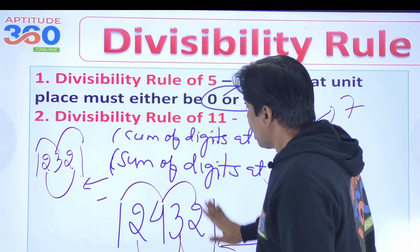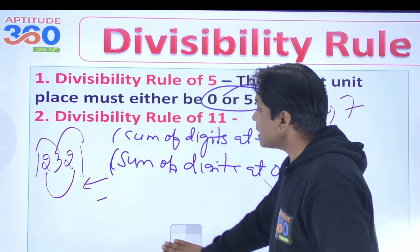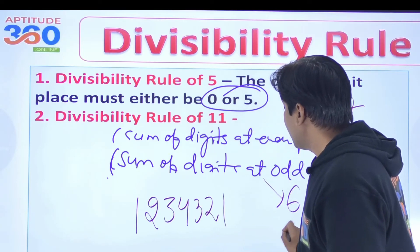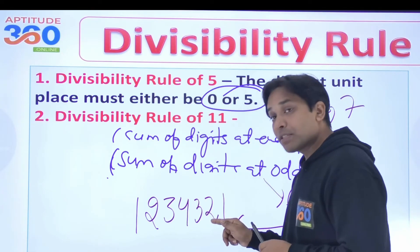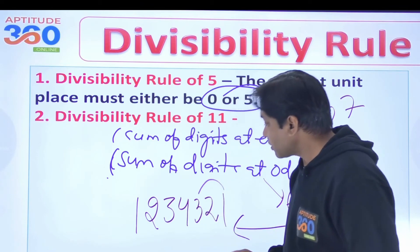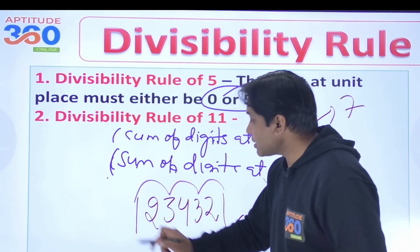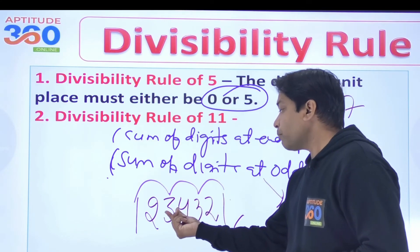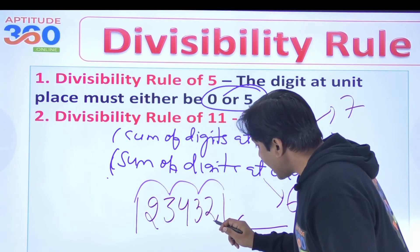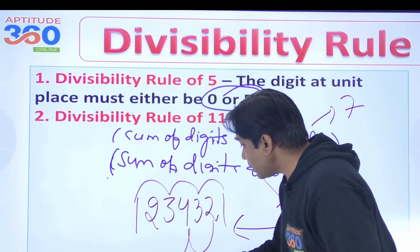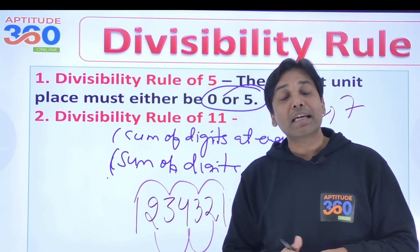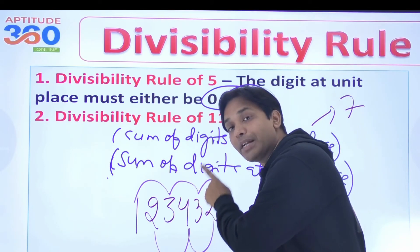To make a number divisible by 11, consider 1,2,3,4,3,2,1. The odd places are 1st, 3rd, 5th, 7th — that gives 1+3+3+1=8. The even places are 2nd, 4th, 6th — that gives 2+4+2=8. The difference is 8 minus 8 = 0, and hence this number is a multiple of 11.